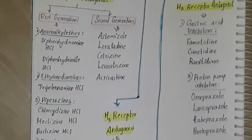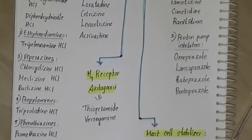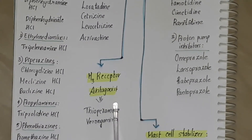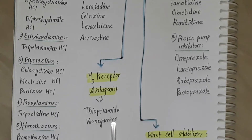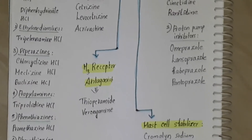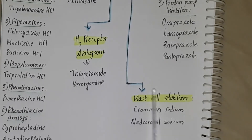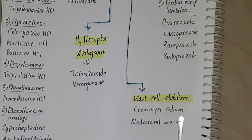Moving on to the H3 receptor antagonists: thioperamide and verongamine. The mast cell stabilizers are chromaline sodium and netochromal sodium.